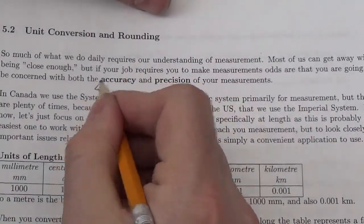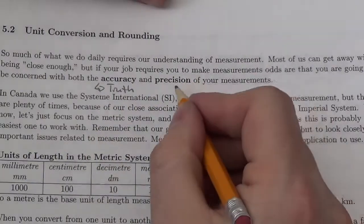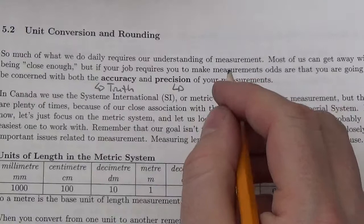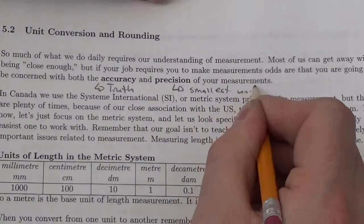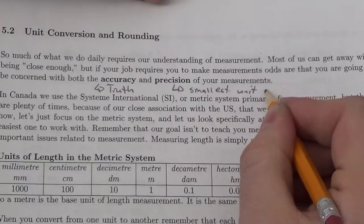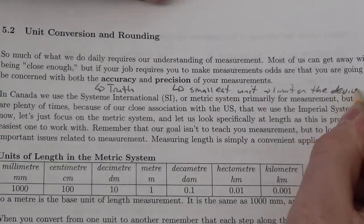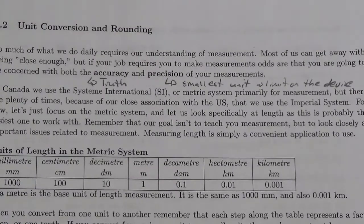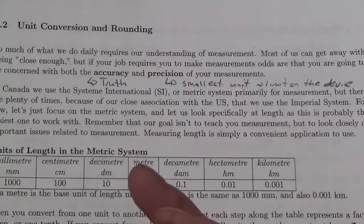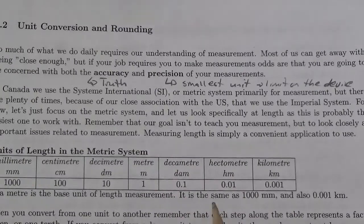Accuracy deals with the truth of your measurement. Precision deals with the smallest unit — basically, precision is a limit on the device. It's how good your measuring device is. And sometimes we need to be really cognizant of that and communicate it so that the people we're talking with know to what degree they can trust our measurement.